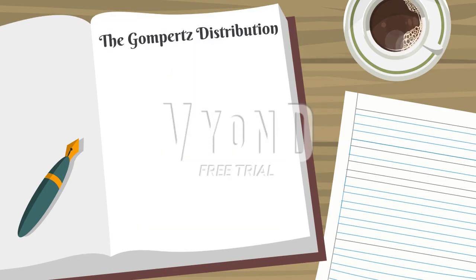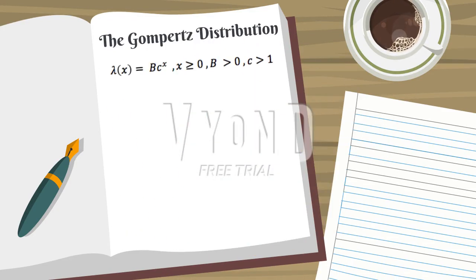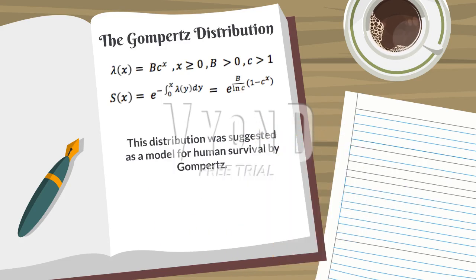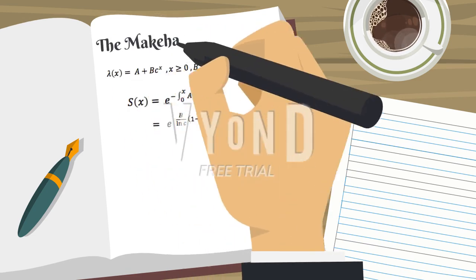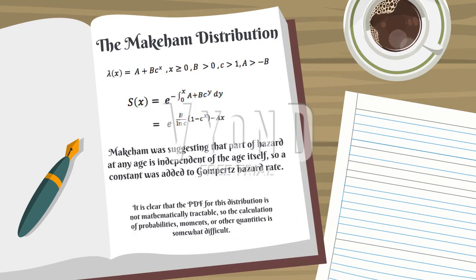This is Gompertz's distribution: lambda(x) equals b times c to the power of x, and f(x) equals exponential to the power of b over the natural logarithm of c, multiplied by 1 minus c to the power of x. This distribution was suggested as a model for human survival by Gompertz. The Makeham distribution's PDF is not mathematically tractable, so the calculation of probabilities, moments, or other quantities is somewhat difficult.